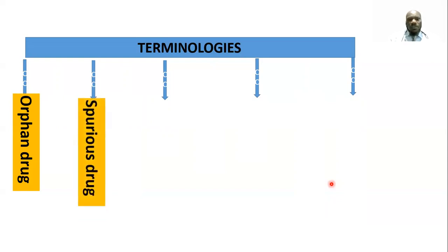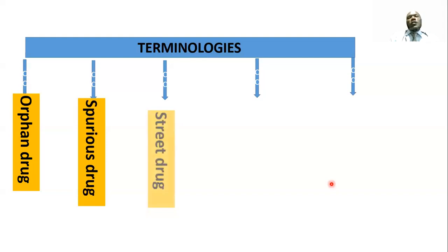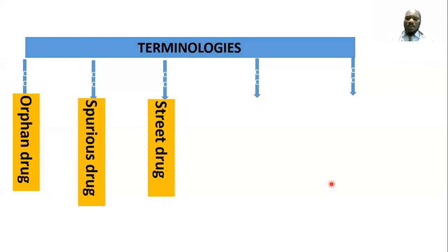We also have the spurious drug, which is considered a counterfeit or imitation drug. We also have street drugs — drugs that are liable to be abused — for example, cocaine and morphine. These are considered controlled drugs, liable to be abused.